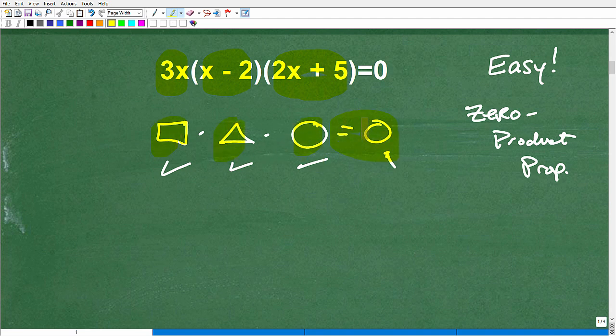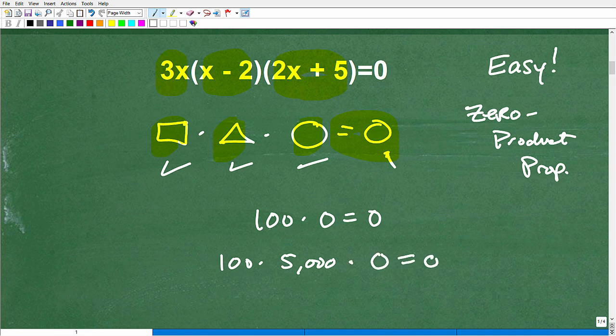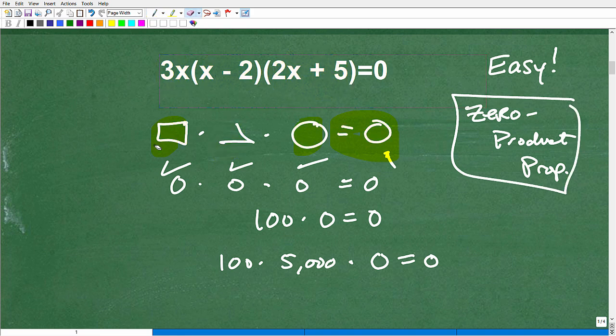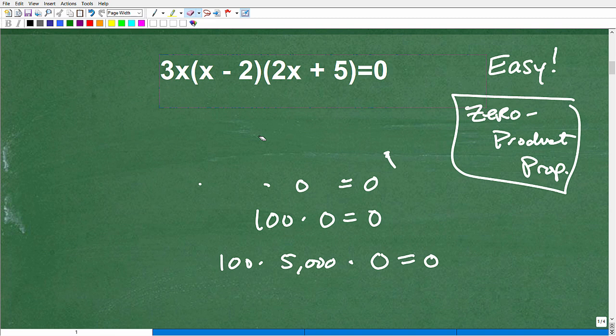How can you get zero as an answer? The only way you can get zero as your final answer if you're multiplying is that one of these or all of these has to be zero. So 100 times zero, that's a zero. If I have 100 times 5,000 times zero, that's zero. Or maybe this could be zero times zero times zero. That's going to be equal to zero. But the main idea here, the zero product property is the following.